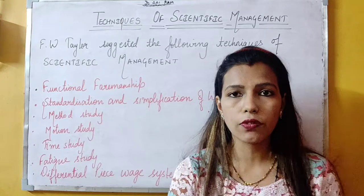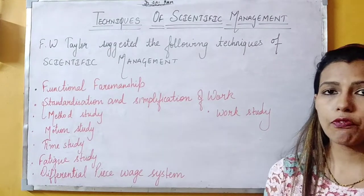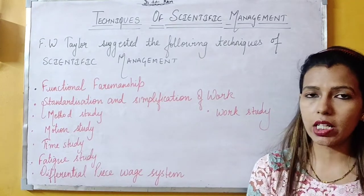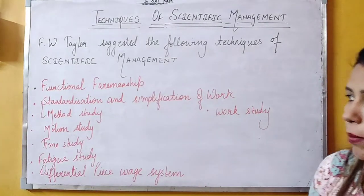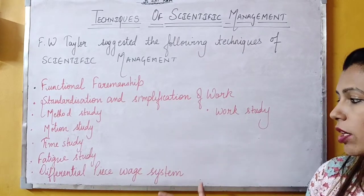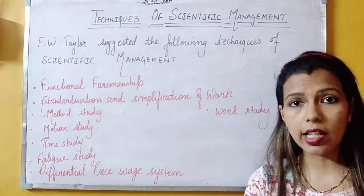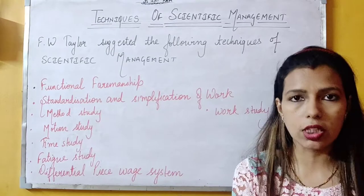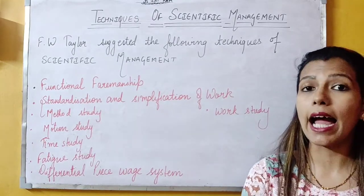We will start with Techniques of Scientific Management. F.W. Taylor suggested the following techniques: Functional Foremanship, Standardization and Simplification of Work, Method Study, Motion Study, Time Study, Fatigue Study, Differential Piece-Wage System, and Work Study. We will study each technique in detail with in-depth explanation and 100% concept clarity so that you don't confuse different techniques in case study questions.